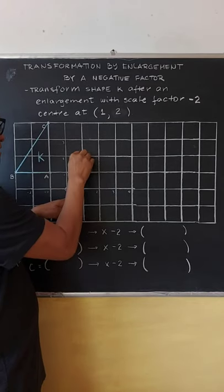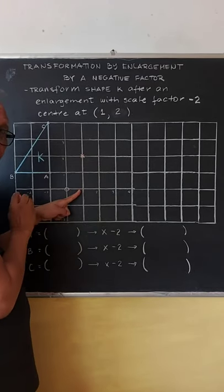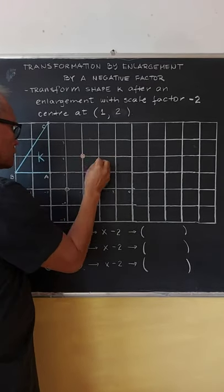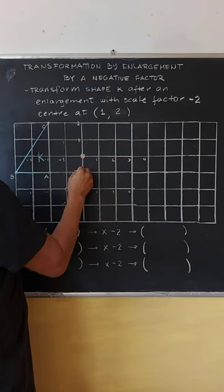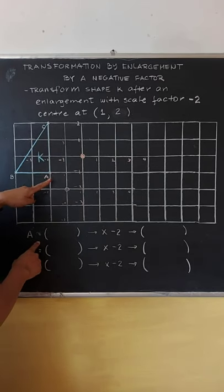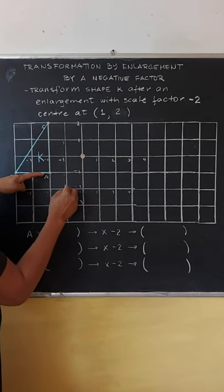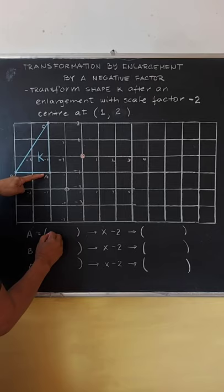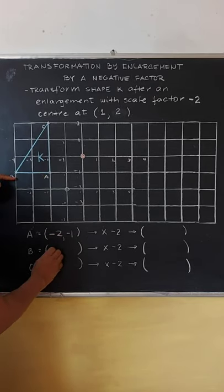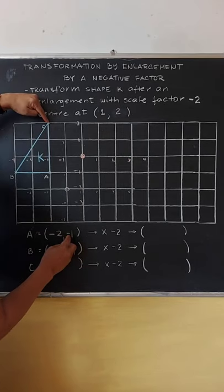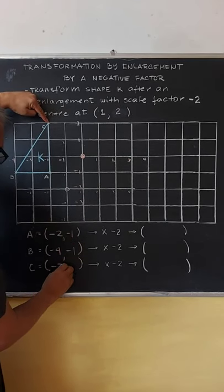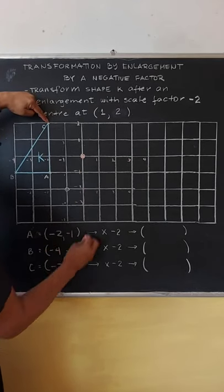One is the original center, one is the center of enlargement. A is negative 2, negative 1, so B is negative 4, negative 1, C is negative 2, and then positive 2.